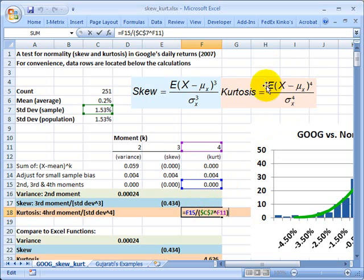which is the numerator in this function, divided by the standard deviation raised to the fourth power. So that's right here, and I get a kurtosis of 4.626.